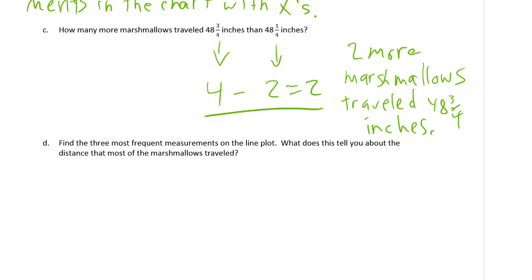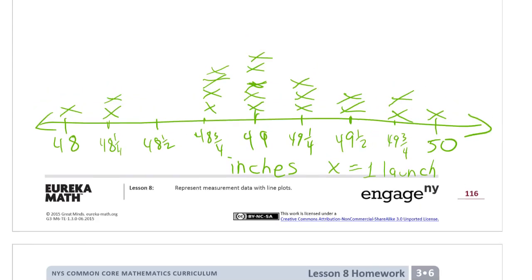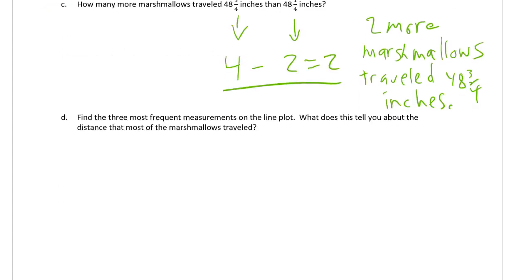Find the three most frequent measurements on the line plot. What does this tell you about the distance that most of the marshmallows traveled? The three most frequent, that's the three that have the most X's. Which ones are those? Most of them have 1 or 2. But these guys here, those are the three most frequent. Those all have more than 2. So it's 48 and 3 fourths, 49, and 49 and 1 fourth all have 3 or more launches.